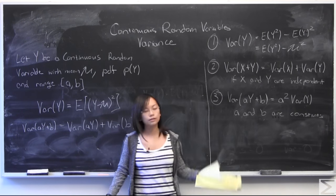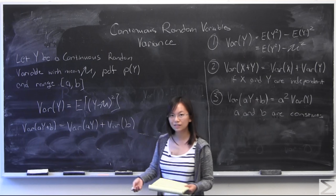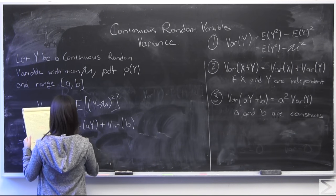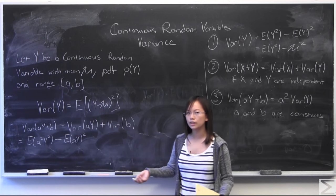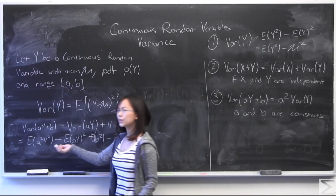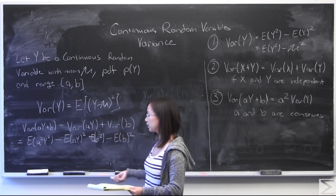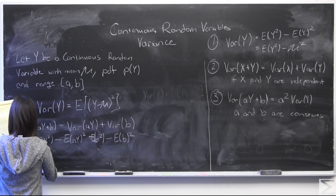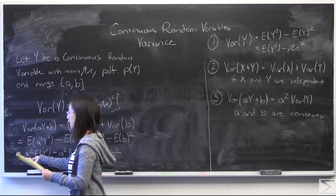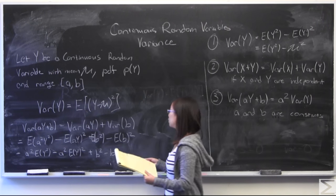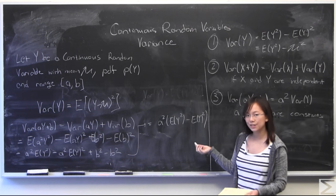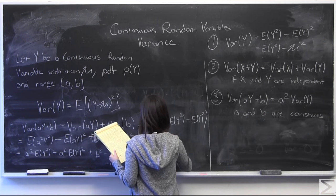I got this first step from using number two, because ay and b are going to be independent from each other — a and b are constants, y is a random variable, so this is a valid move. I'm going to write down what variance of b looks like, even though I already know it's going to be zero — I'm about to show why. I got the next step from number one, turning it into expectation values. From this, I hope you see that variance of b equals zero. So I pulled out a squared. And I'm going to pull it out again to show that — b's cancel out, b squared cancels out — this is equal, by number one, to a squared times the variance of y.